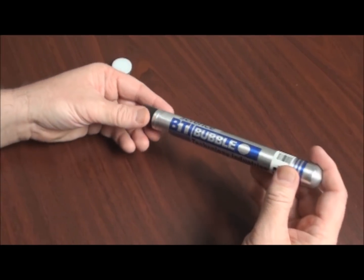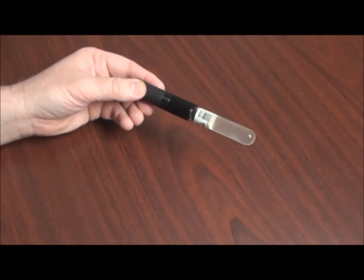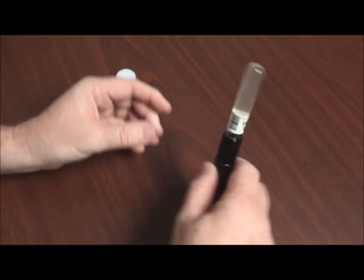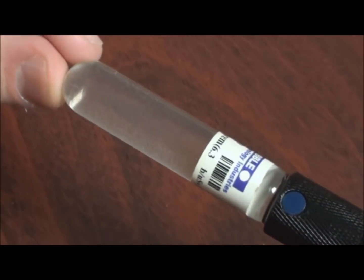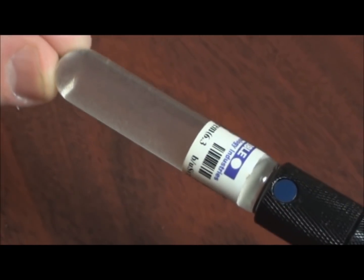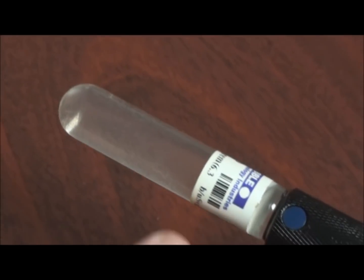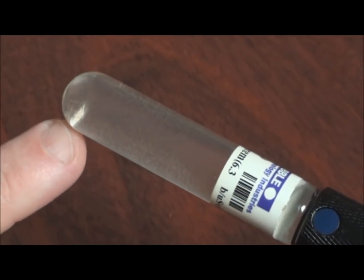Now let's take a look at the features of the bubble detector before we move on to how to use it. The glass section here contains the liquid in which the bubbles will form when the unit is struck by neutron radiation. You can see right now there are an awful lot of small bubbles in there.